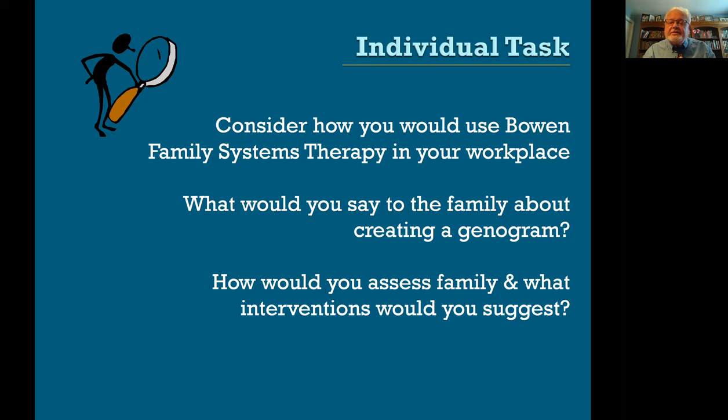As you're thinking about all this, jot down some ideas about how you would use Bowen's model in your own workplace. What would you say to a family if you were going to suggest that they create a genogram together with you? How would you assess that genogram and what interventions would follow from it? This can help you not only understand the theory but also understand how to use it.